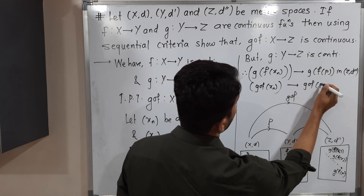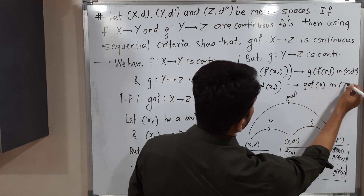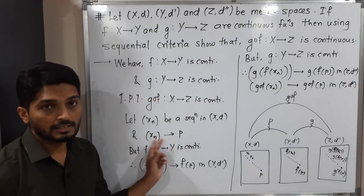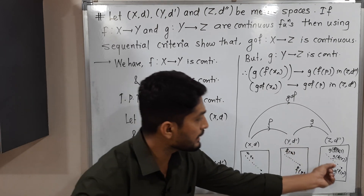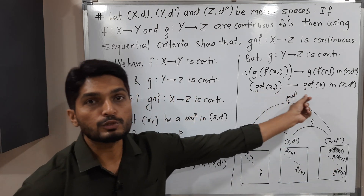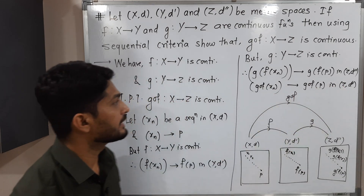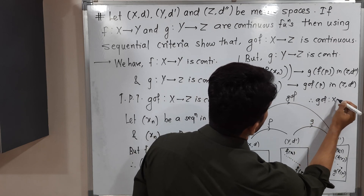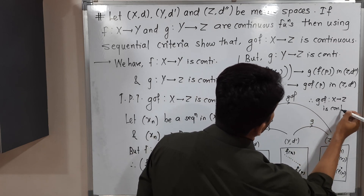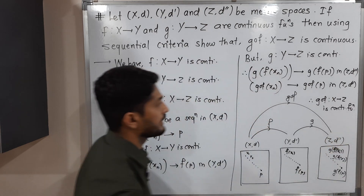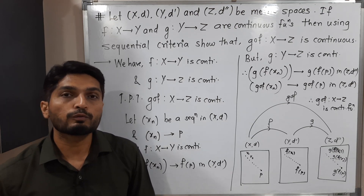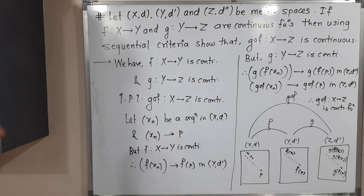Now, G(F(X_n)) is the same as G composite F of X_n, and it converges to G(F(P)), which is G composite F of P, in Z with metric D-double-dash. So we started with a convergent sequence in X and we got that its image G composite F(X_n) converges to G composite F(P) in Z. Therefore, G composite F from X to Z is a continuous function. In this way, using sequential criteria, we proved that the composition of two continuous functions is also continuous.